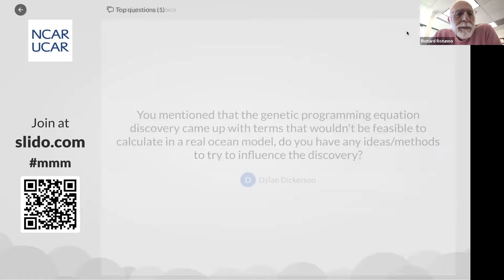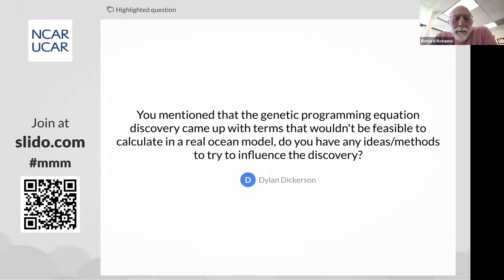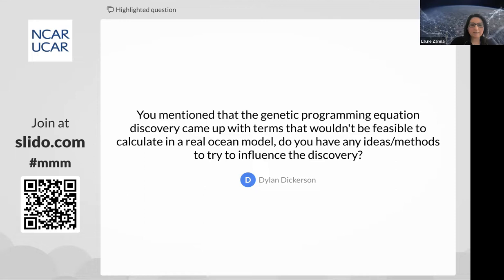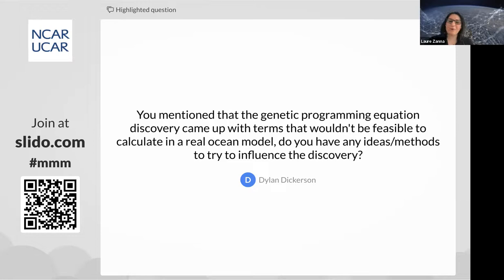A question from Dylan Dickerson: genetic programming came up with terms not feasible to calculate in a real ocean model — do you have ideas to influence the discovery? It's always a dilemma how much to let the machine decide versus intervening. When we pre-computed the library of functions, we were 100% deciding what the algorithm sees — using physical intuition that strain and shear and vorticity will be important. With genetic programming, we introduced the human-in-the-loop intervention partly for this reason, to avoid physically nonsensical terms. It's still an open question how to best balance discovery versus physical constraints.